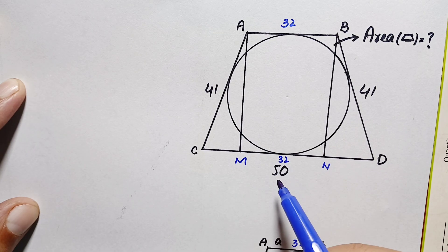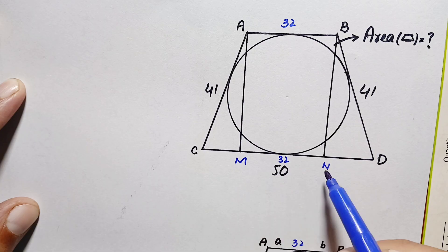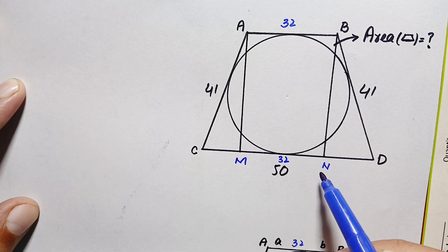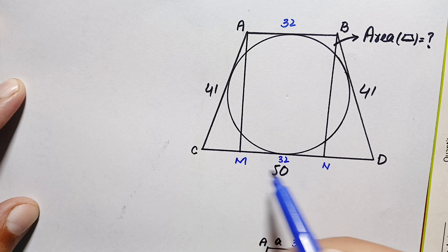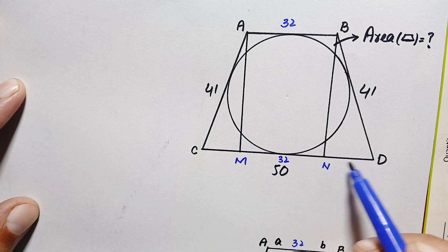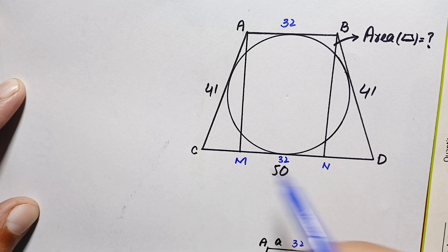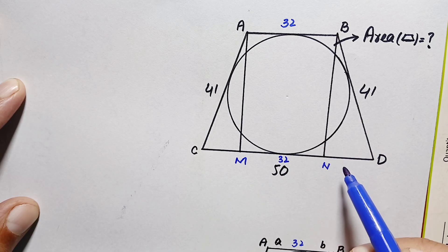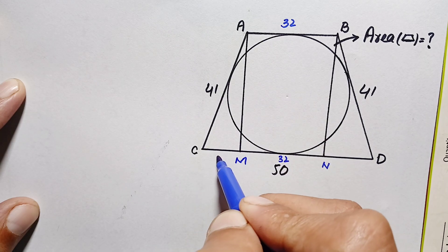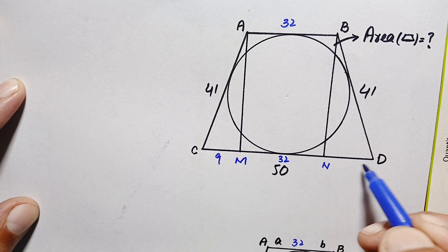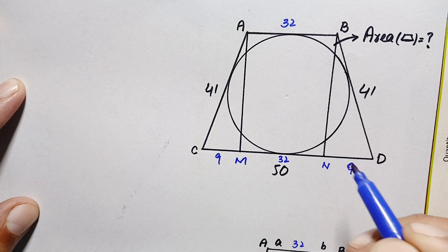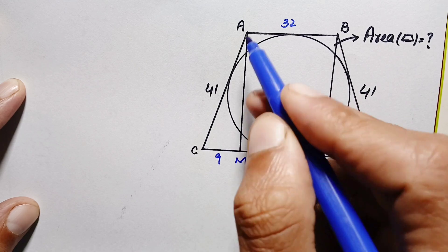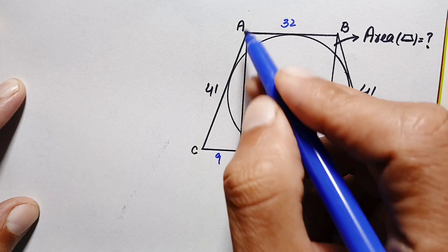The total length CD is 50 units and MN is 32 units, so the remaining length is 50 − 32 = 18 units. Since the trapezoid is isosceles, CM and ND are equal, so each equals 18 ÷ 2 = 9 units. Therefore CM = ND = 9 units.